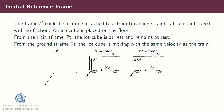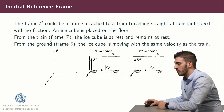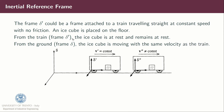Let's consider this example. We have a frame delta prime, which is a frame attached to a train traveling straight at constant speed with no friction, and an ice cube is placed on the floor of this train. From the train frame delta prime, the ice cube is at rest and remains at rest. From the ground frame delta, the ice cube is moving with the same velocity of the train and keeps this velocity.